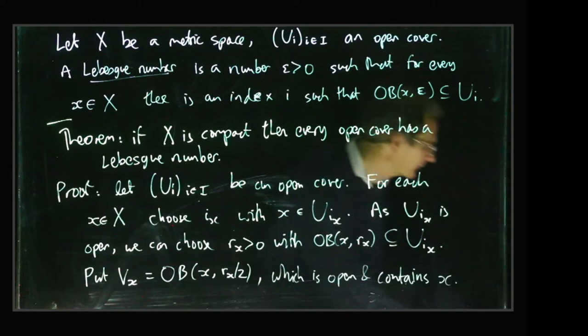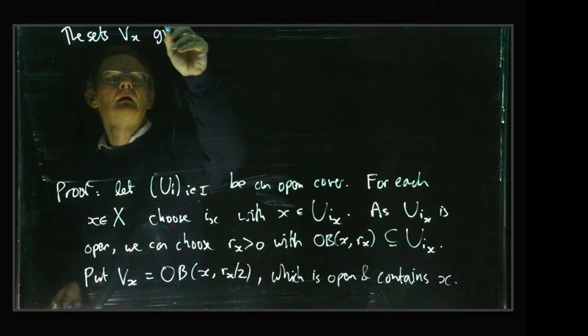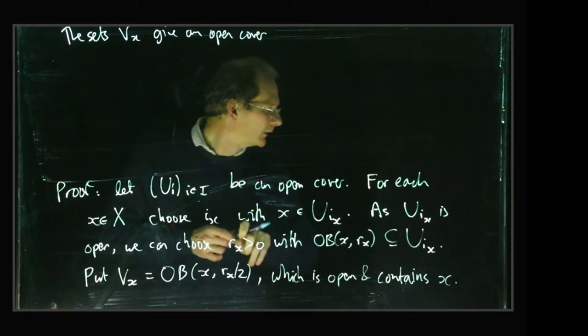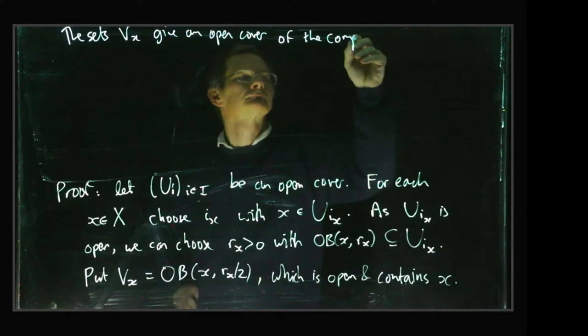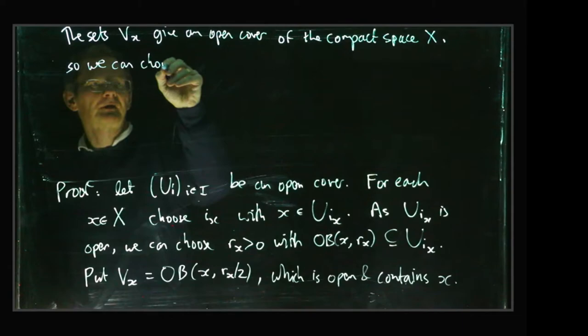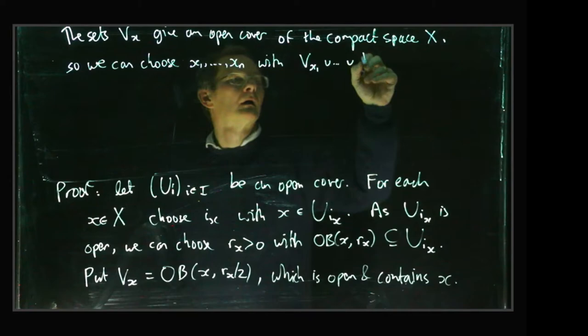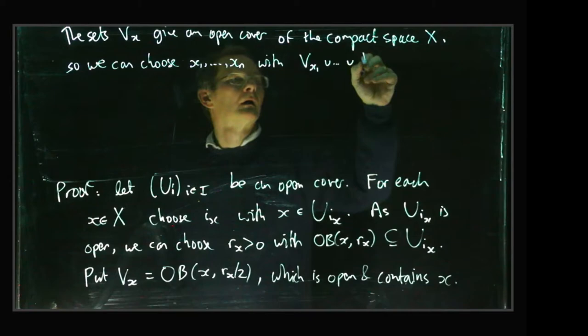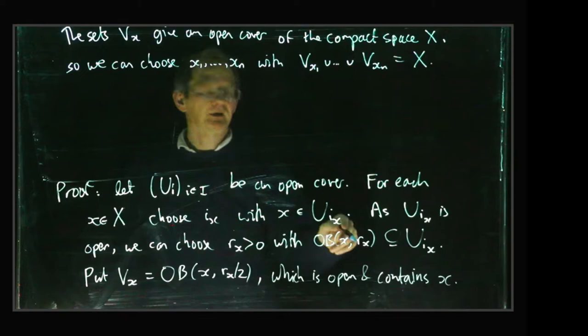Okay, so these sets Vx are going to give us an open cover which has a finite subcover. These sets Vx give an open cover, so we can choose a finite subcover. In other words, choose some finite list so the union of the corresponding V sets is the whole space X.